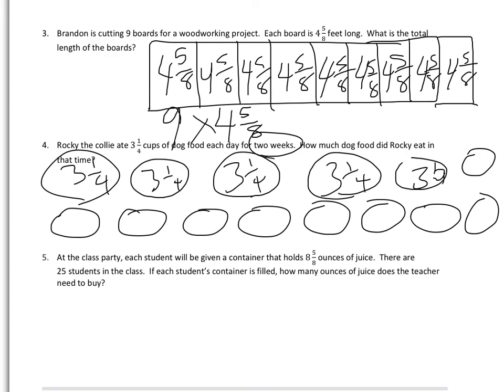The last one, each student is given a container of juice. So I may draw juice boxes showing 8 and 5 eighths. 25 students. So this is going to be a big picture to include 25. Or I may say, I recognize that each kid is getting that. And then students can solve those.